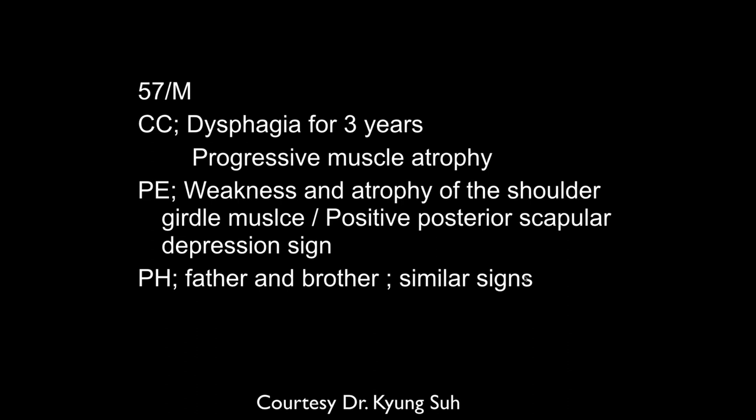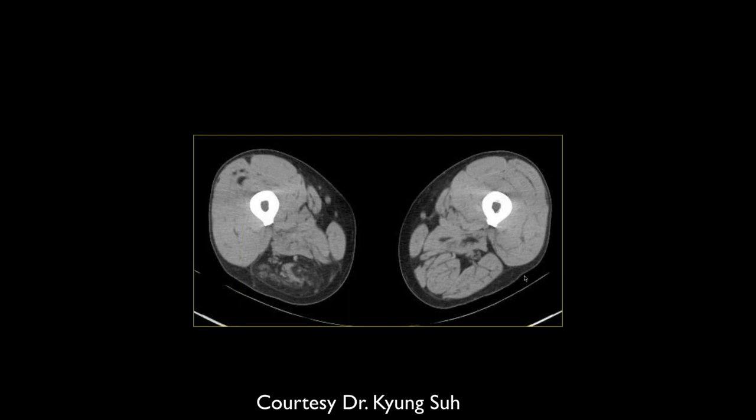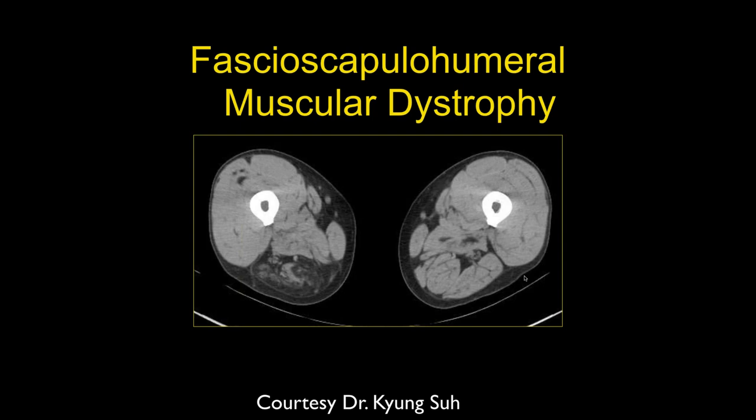A 57-year-old man with dysphagia for three years, progressive muscle atrophy, weakness and atrophy of the shoulder girdle muscles, positive posterior scapular depression sign — and his father and brother had similar symptoms. The imaging shows asymmetric right hamstring atrophy. There's a question of whether this is mitochondrial, which would typically be more symmetric and systemic, versus another intracellular genetic cause.